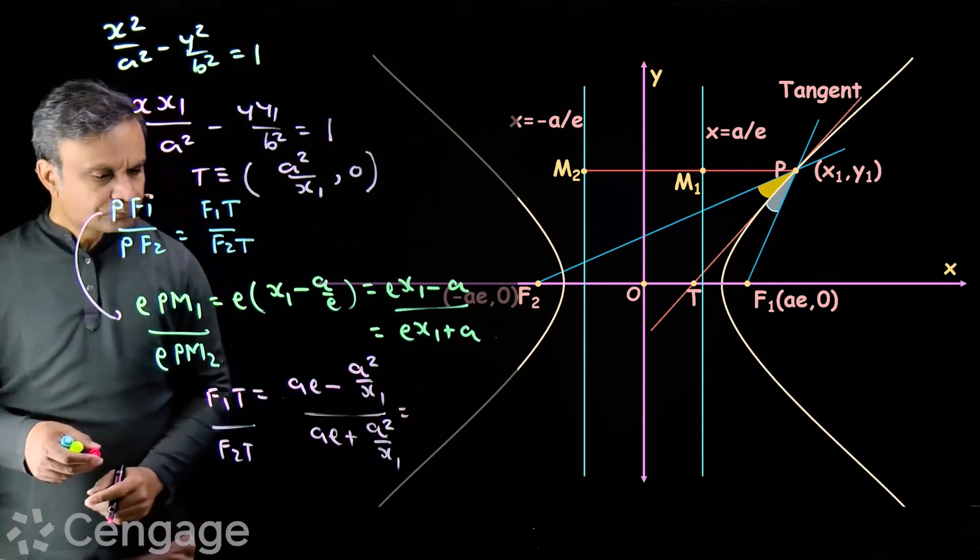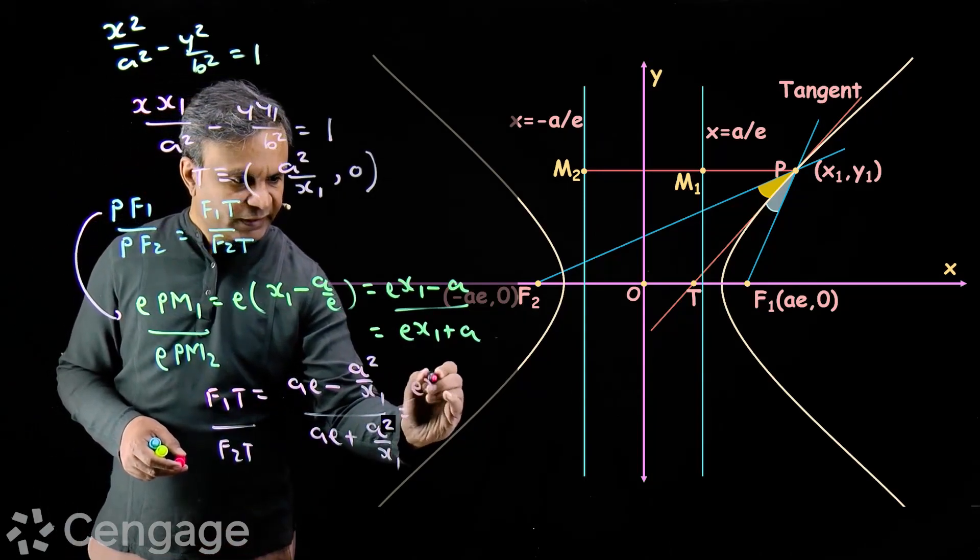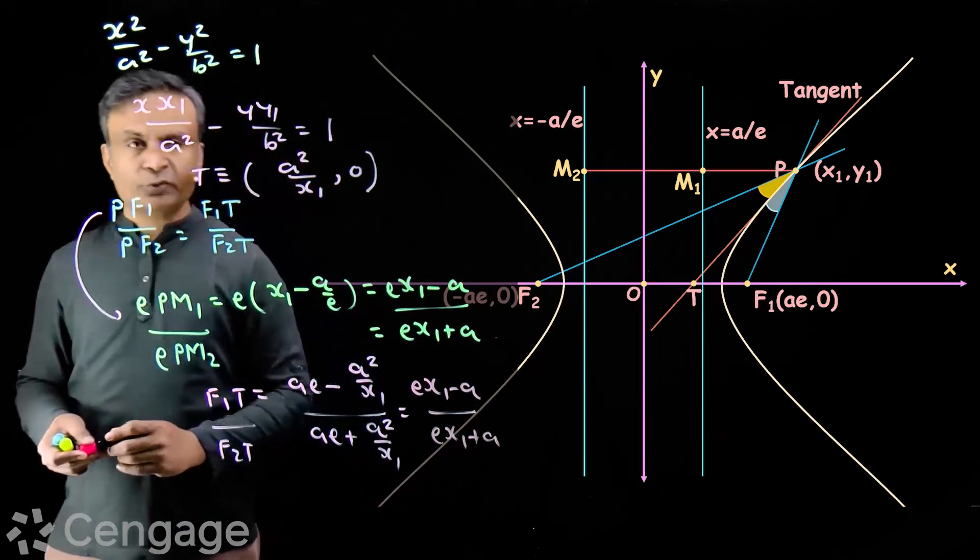Simplify. Here, a will cancel. And we will get ex1 minus a over ex1 plus a. Proved.